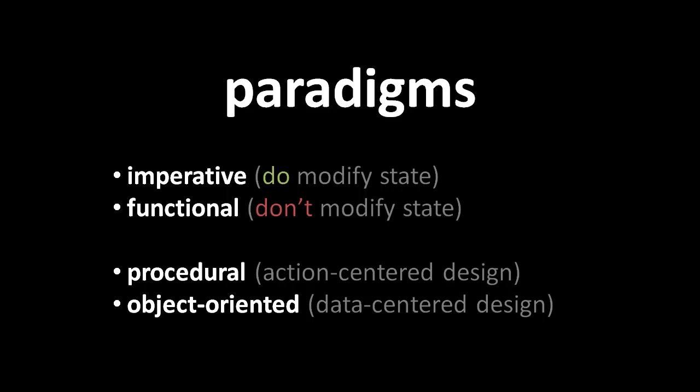In programming, a paradigm refers to a fundamental approach, a style, of considering and solving problems. Most programming follows either an imperative paradigm or alternatively a functional paradigm, and at the same time most programming follows either a procedural paradigm or alternatively an object-oriented paradigm. So we have four combinations: imperative and procedural, imperative and object-oriented, functional and procedural, or functional and object-oriented.